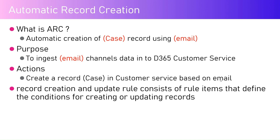ARC creates a record in the customer service system based on email receipt. The record creation and update rule consists of rule items that define conditions. For example, you can set a condition: if you receive an email to info@abc.com and the subject line contains the keyword 'ticket', then go ahead and create the record.